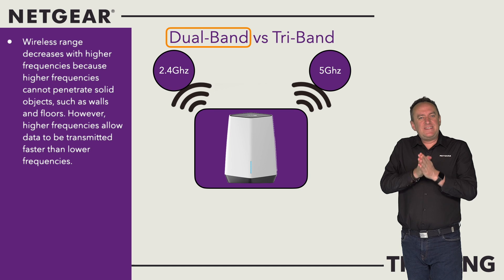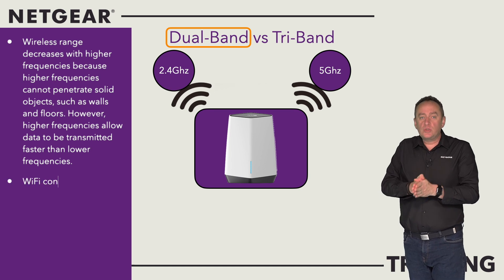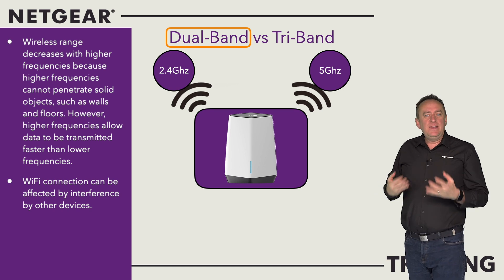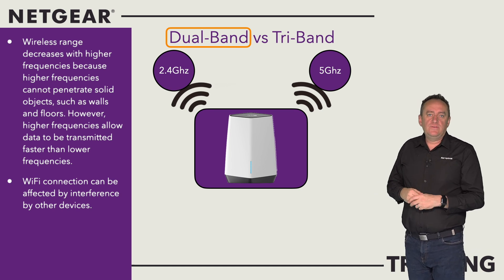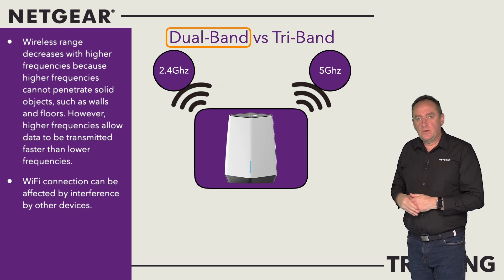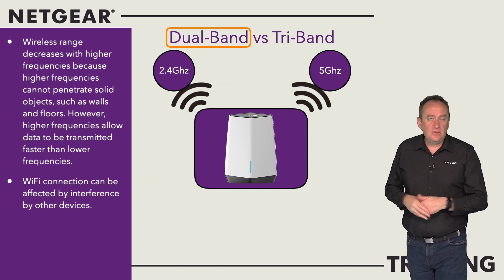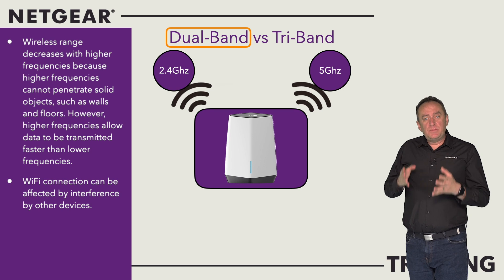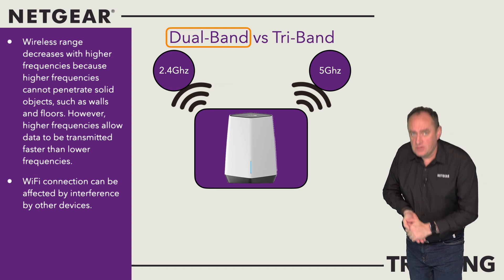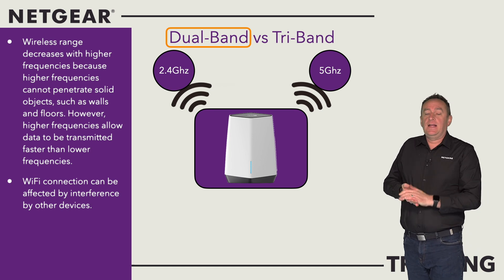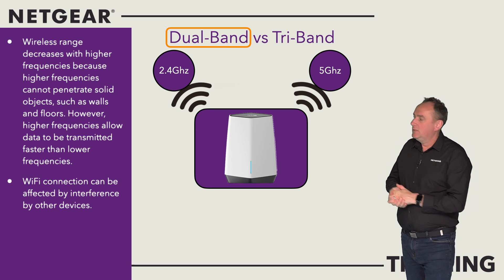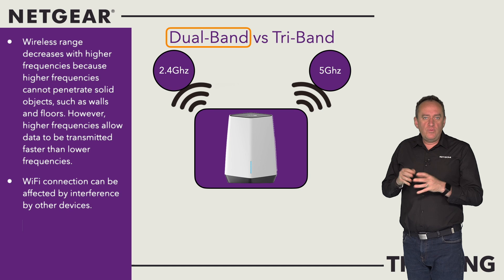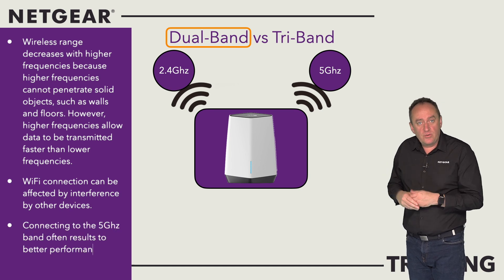Wi-Fi connections on a particular frequency band can also be affected by interference from other devices. For example, many Wi-Fi enabled technologies and other household devices use the 2.4GHz band — these include microwaves and garage door openers. When multiple devices attempt to use the same radio space, overcrowding occurs. Connecting to the 5GHz band often results in better performance due to less overcrowding.